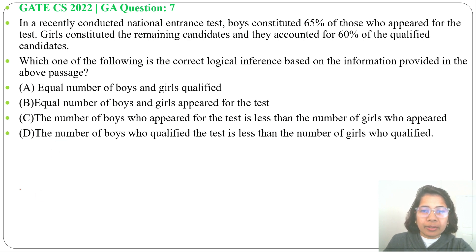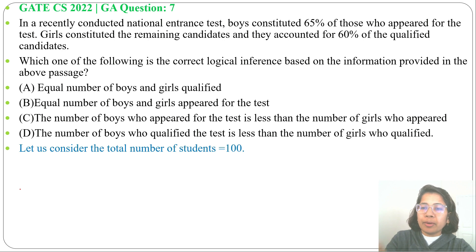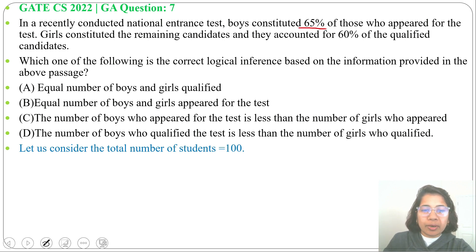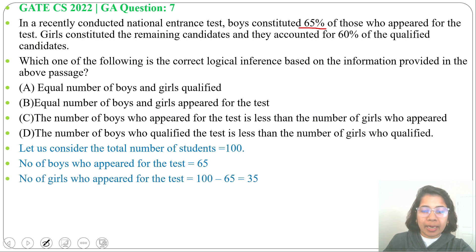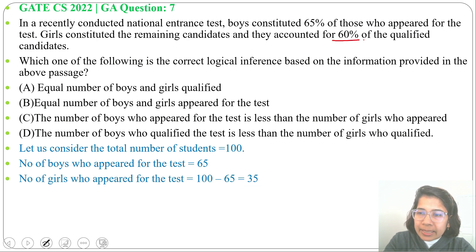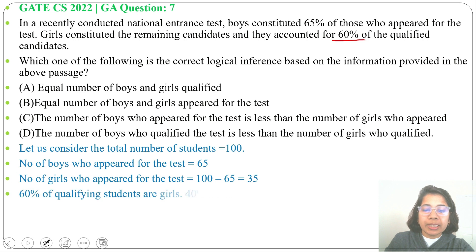Let's take the number of students equal to 100. From that 100, 65% are boys, so the number of boys who appeared for the test equals 65, and the number of girls will be 100 minus 65, which is 35. It's given that 60% of girls are qualified, which means 40% of boys are qualified — 100 minus 60 equals 40%.